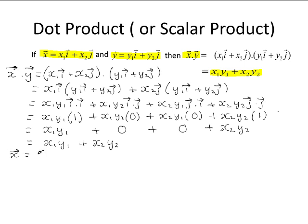So for example if you have the vector x equals 5i minus 3j and the vector y equals 7i plus 2j, and you want to find the dot product of x with y.